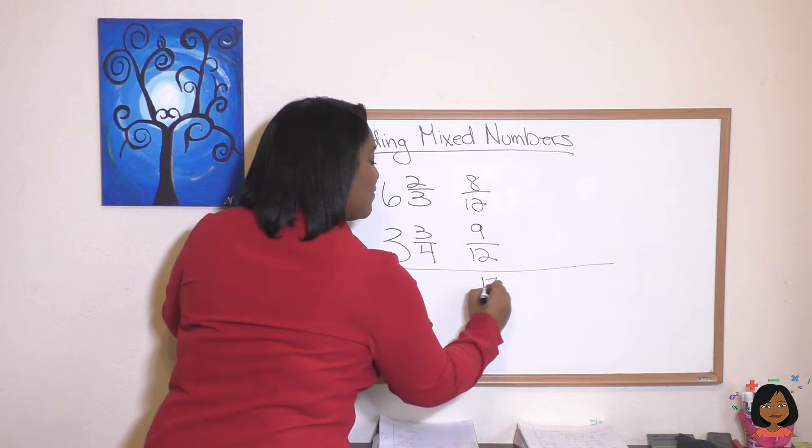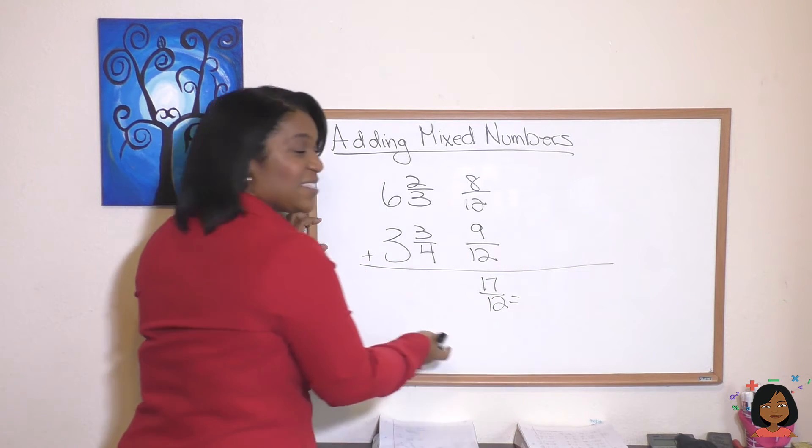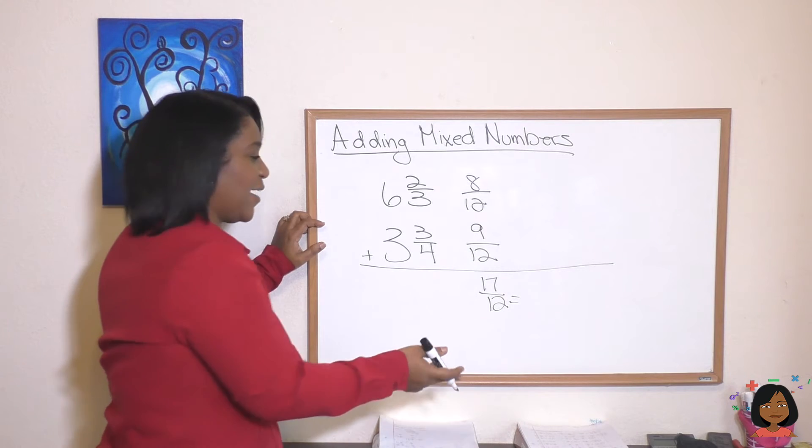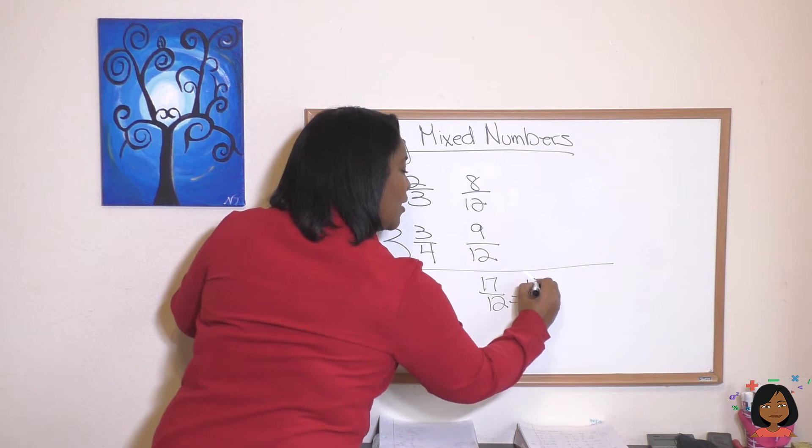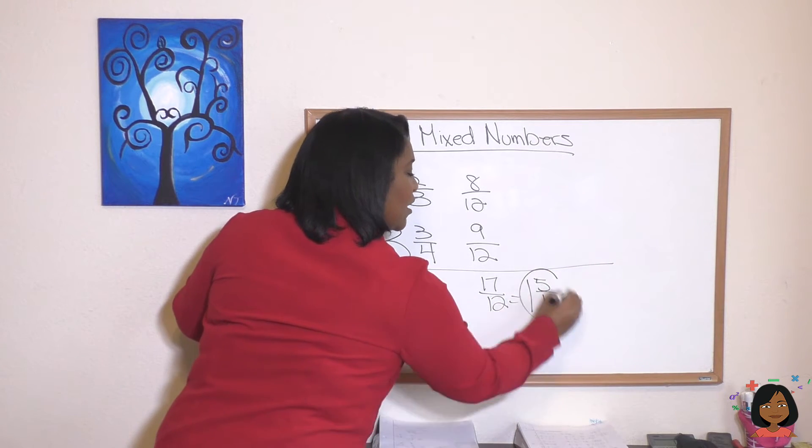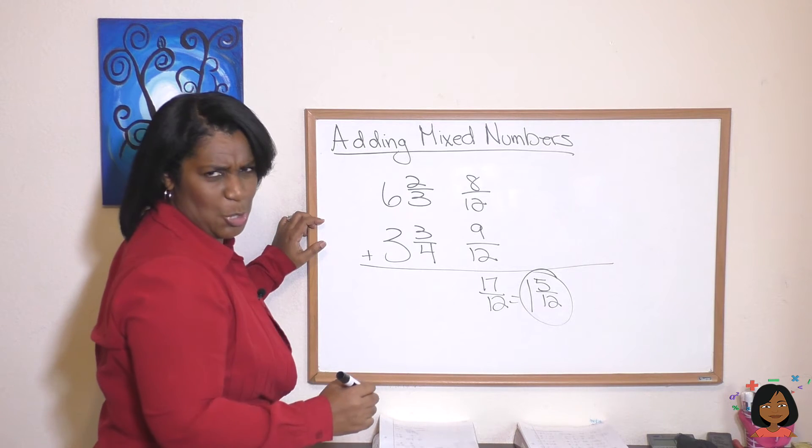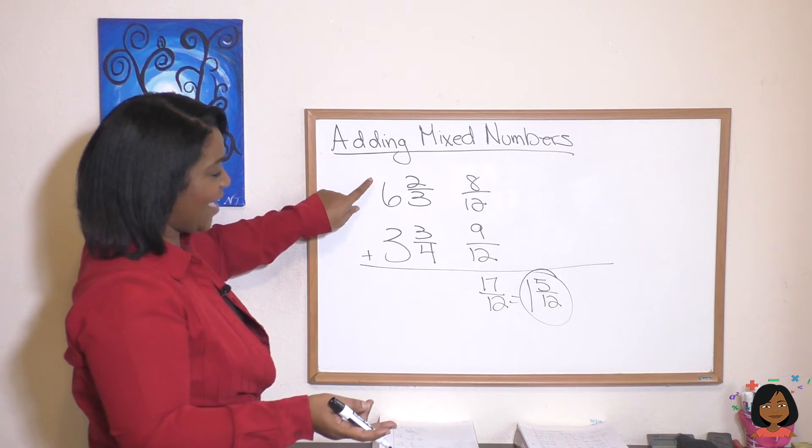And that comes down to 17/12. And since I'm here, I'm going to go ahead and just simplify it. That turns into 1 5/12. And are we done? Nope. We haven't handled our whole numbers yet. So let's do that.